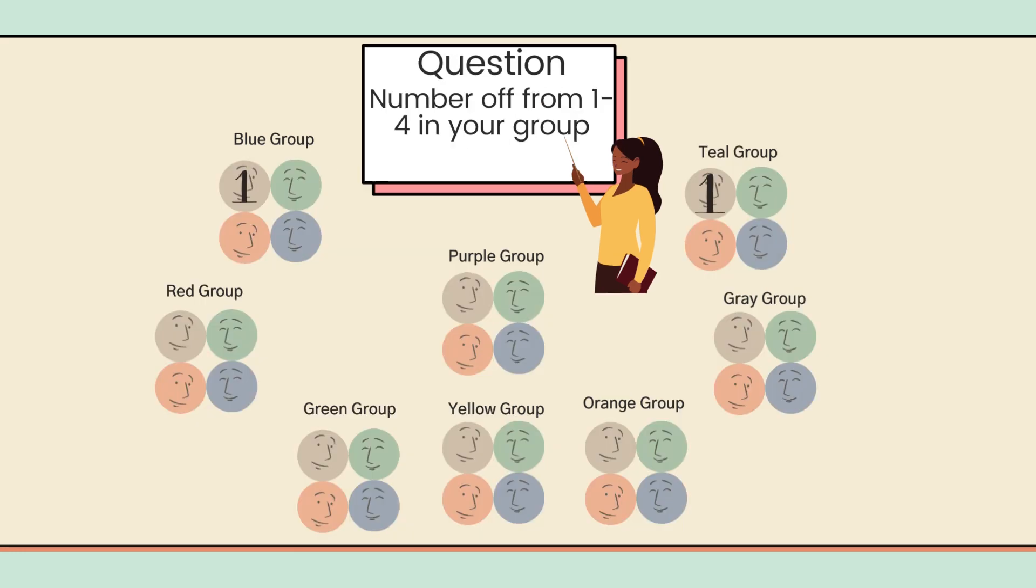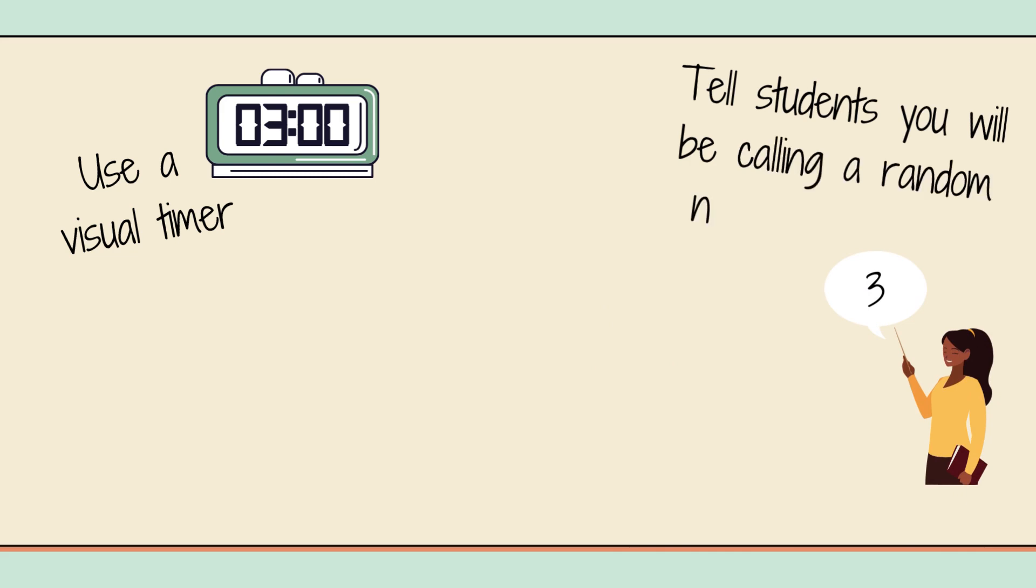Students number off one to four within their group. It's acceptable to have two number fours if there are outlier students. The teacher sets a visual timer for group discussion, telling them she will call a random number from each group to share, so everyone should actively participate and listen.